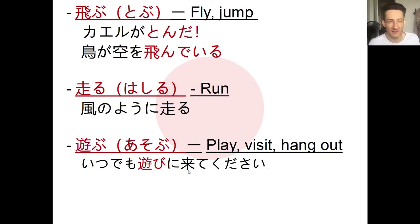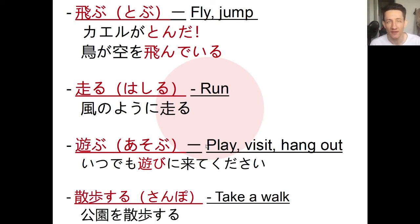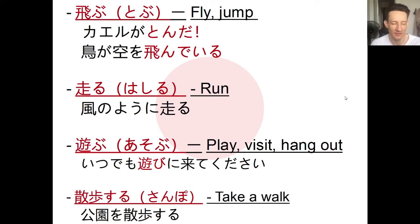Here's an example with asobu: asobi ni kite kudasai — please come and visit. Finally, sanpo means to take a walk. Add suru to make it a verb: sanpo suru. For example, kouen wo sanpo suru — to take a walk through the park. Again, notice we use the particle wo with the place: not kouen ni or kouen de, but kouen wo sanpo suru. Keep tobu, hashiru, asobu, and sanpo suru in mind — they're all very useful verbs.